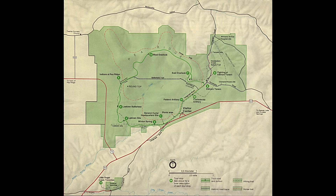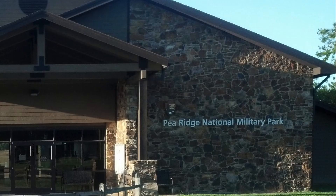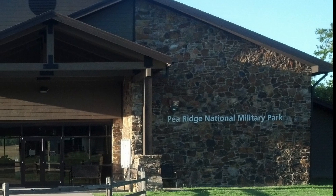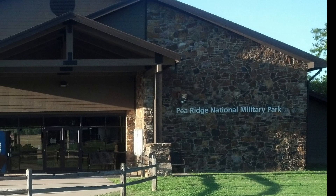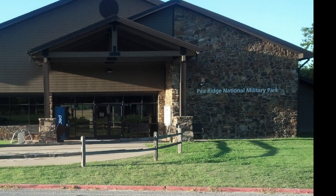Pea Ridge National Military Park, which was founded in the 1950s, is one of the best preserved Civil War battlefields. A reconstruction of the Elkhorn Tavern, which was the scene of the heaviest fighting, stands in the original location. The park also recognizes the Trail of Tears.